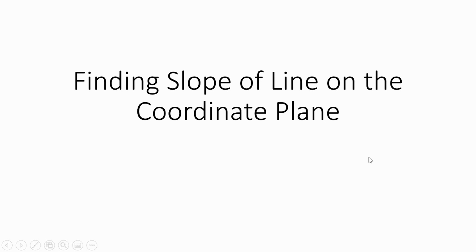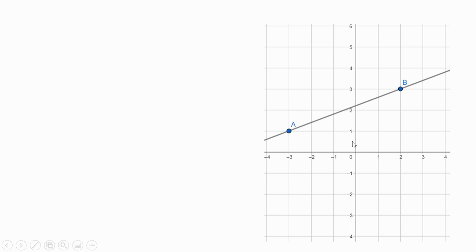We're finding the slope of a line on the coordinate plane. Slope has many ways to describe it, but the best way to think of it is as a rate of change — how something is changing. We're going to look at how lines are behaving. The first thing I like to do is look at it generally and ask: is it increasing or decreasing? Reading from left to right, this is an increasing line, so we know the slope should be positive.